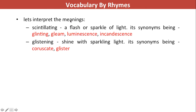Let's learn synonyms. Scintillating means a flash or sparkle of light. Other related words: glinting — something that glints produces light, it flashes. Gleam means to shine brightly when light is thrown at it — basically reflecting. For example, a mirror gleams. Luminescence is the property where an object when not heated produces light, whereas incandescence is when an object produces light because it is heated.